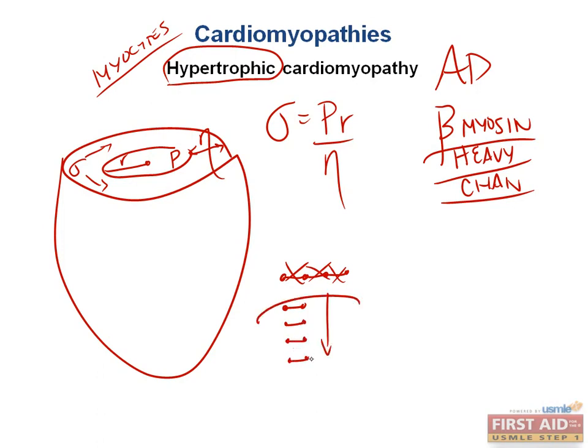When you add things in parallel, it goes towards the center and obliterates your lumen. This is why it's called concentric — concentric means towards the center. Hypertrophy means things are getting thicker and larger.